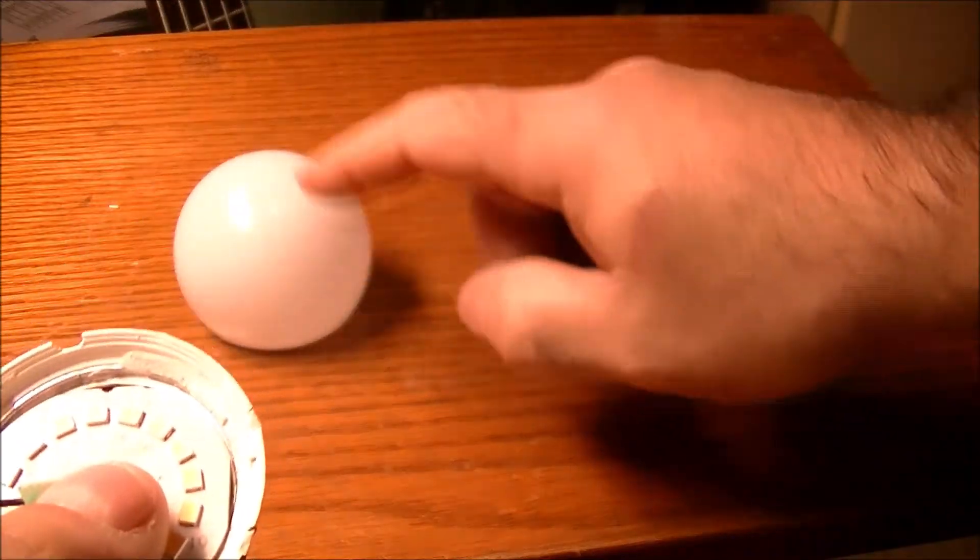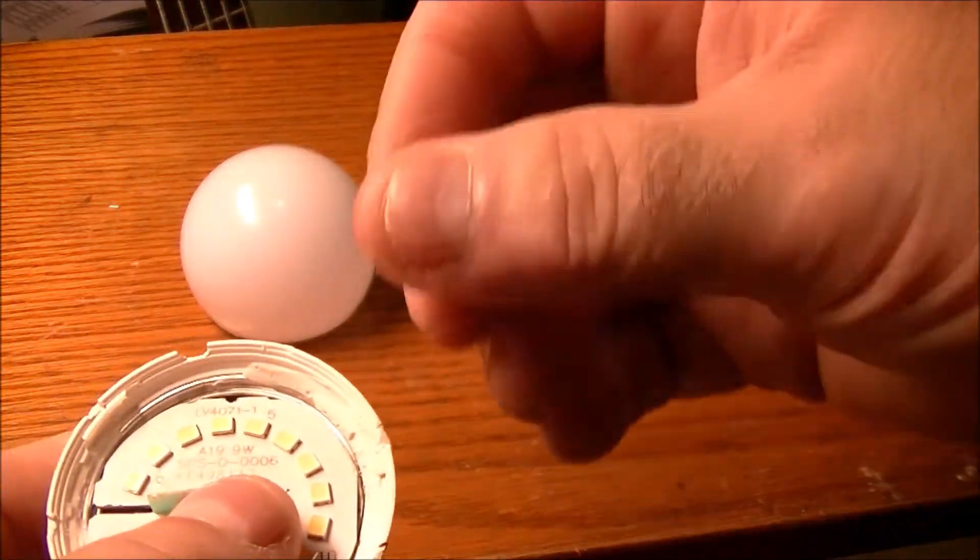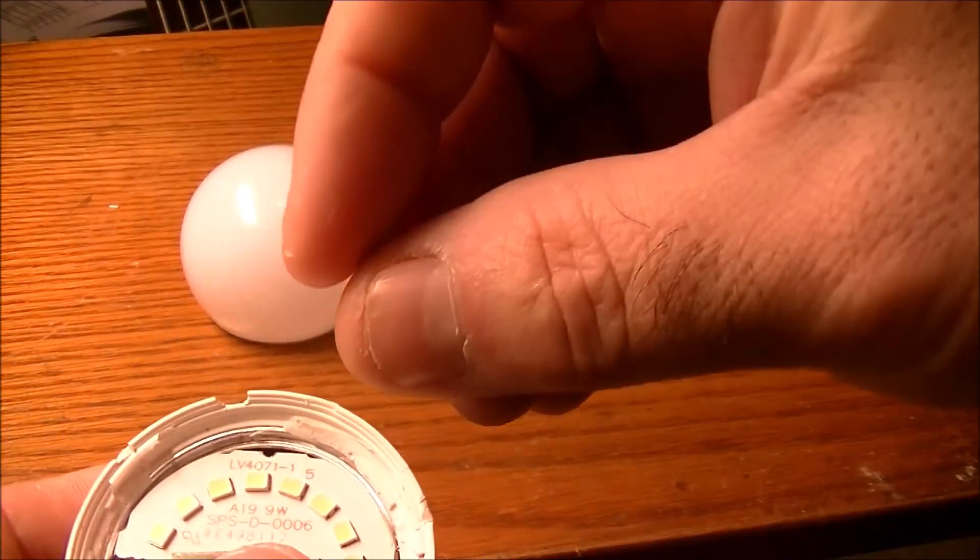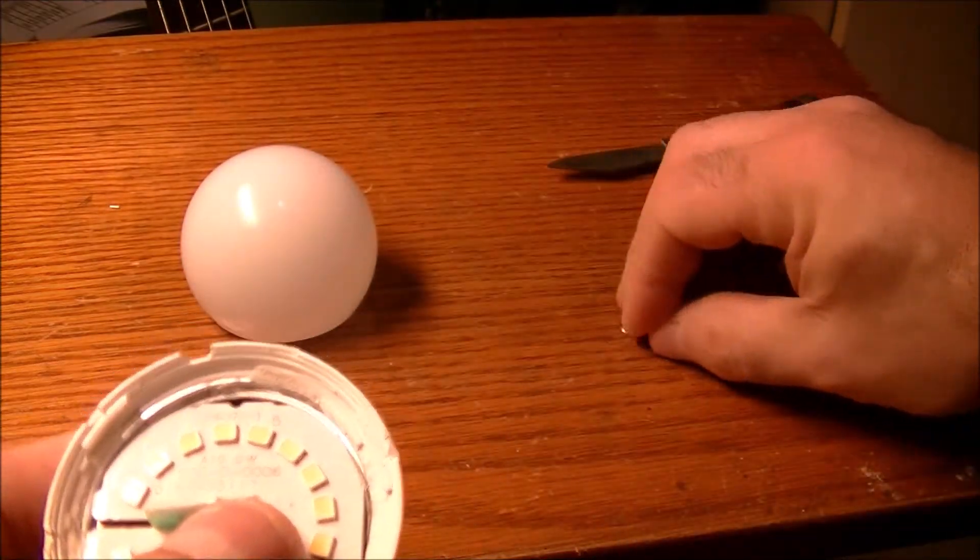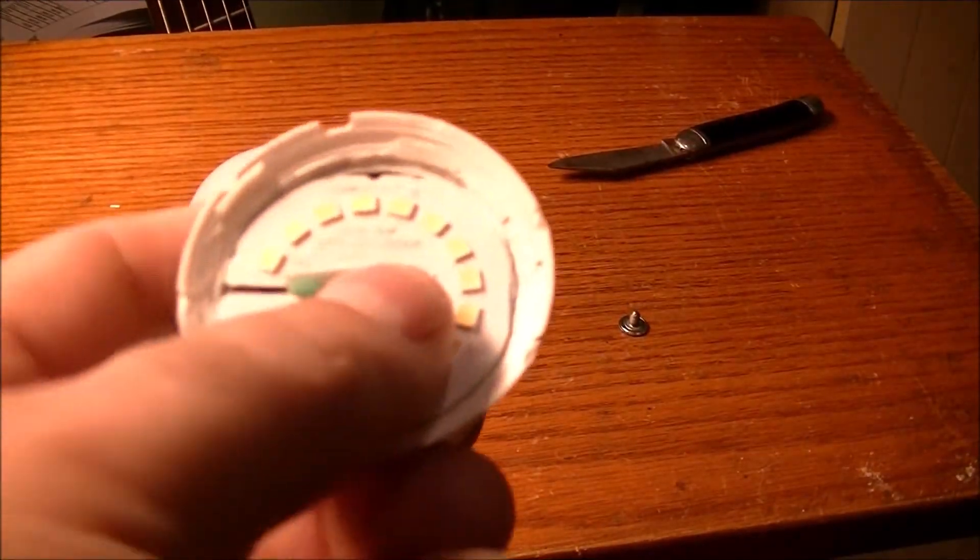And then put this lid back on and maybe a couple of dabs of hot glue to hold it in place. And then put this back in the shed so I can get some more use out of it. Let's see how we do. I'm not sure if it's going to work, but we're going to give it a try.